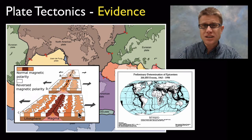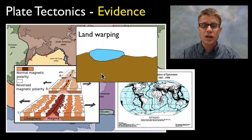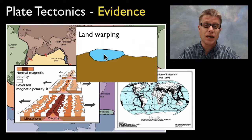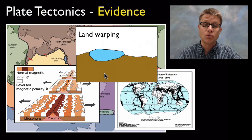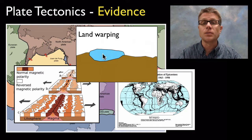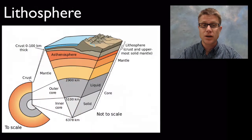Things sitting on the plates are actually going to push down on them — things like massive glaciers and lakes are going to push down on these plates. As those glaciers go away, the earth is going to rebound. So there's overwhelming evidence that plate tectonics is correct.